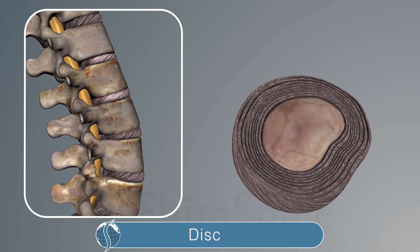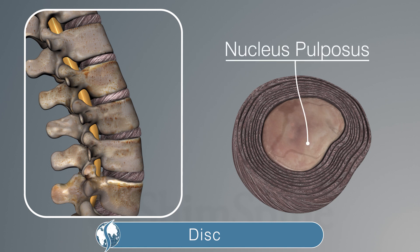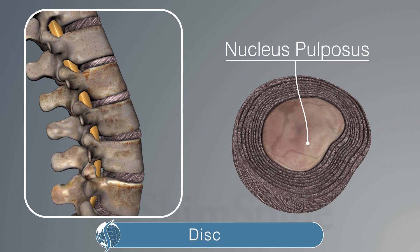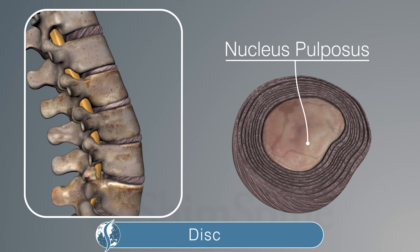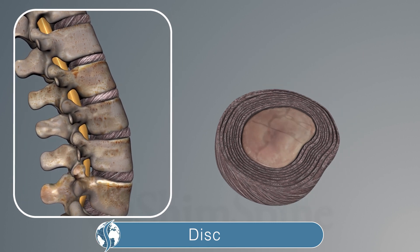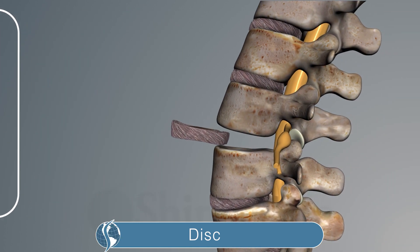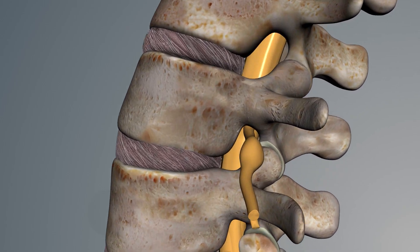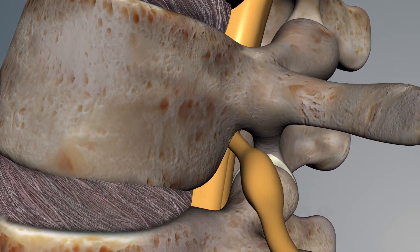The softer inner piece is called the nucleus pulposus, and it acts as a shock absorber. It also creates a disc space between the bones, allowing the nerves to branch off from the spinal cord into the respective body parts.